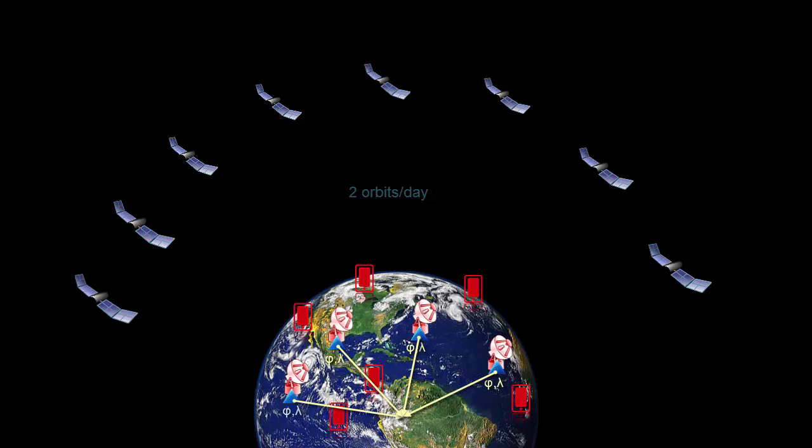So using ground stations, we are able to calculate the coordinates of each satellite at any given time. Now, as users, we want to calculate the coordinates of the point where we are standing, by using a signal from the orbiting satellites.